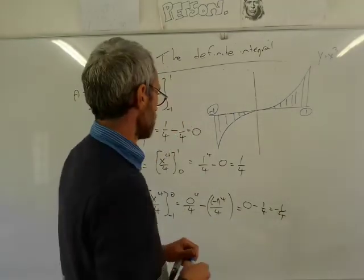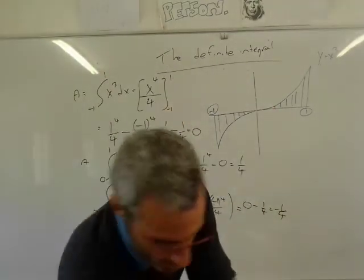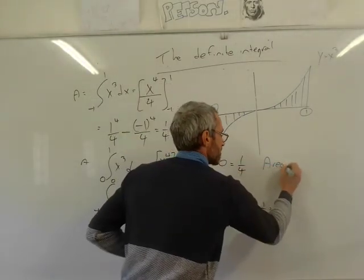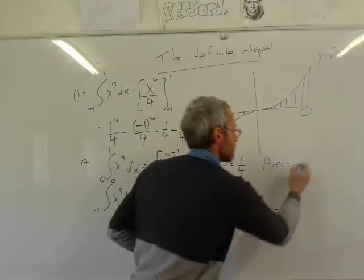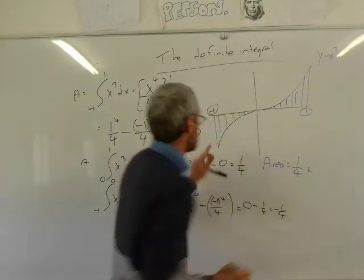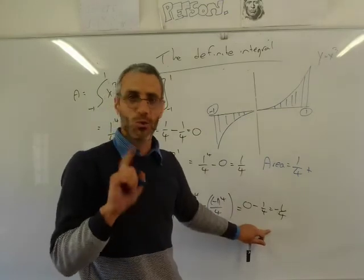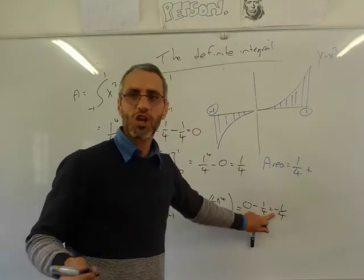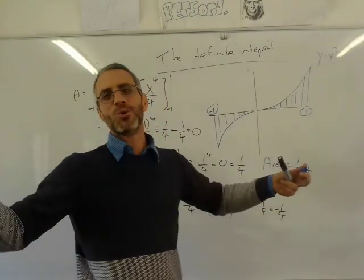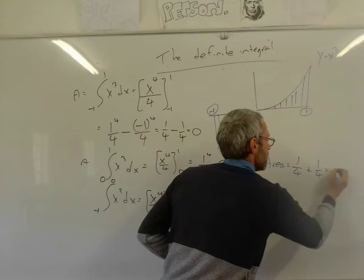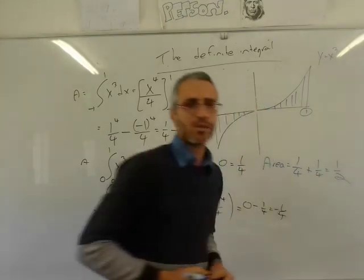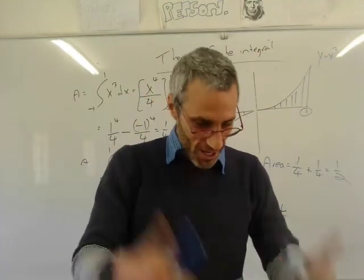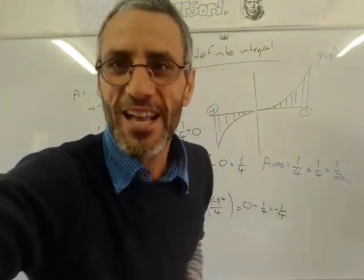So the total area: from 0 to 1 is a quarter, and from minus 1 to 0 is not minus a quarter — if I add minus a quarter again it becomes 0 and we know the area is not 0. Area is always positive, so I convert it to plus a quarter. The answer is a half. That's it guys — you can now do exercise 2.1. Have a lovely day.